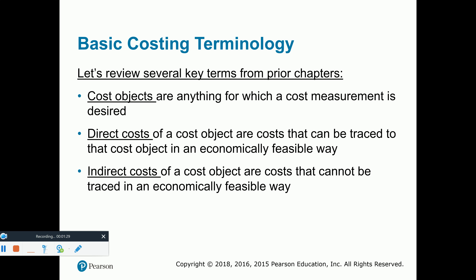Let's compare that to a future chapter where we talk about something called process costing. Process costing is when the inventory we are producing or manufacturing is exactly the same. A good example would be Colgate making tubes of toothpaste. The tube of toothpaste that I buy at the store is the same exact tube you buy at the store. Therefore, the cost that goes into each inventory item is exactly the same. We will study that in the next chapter.